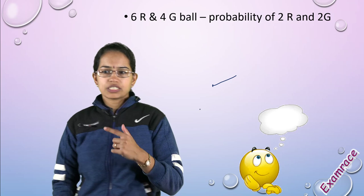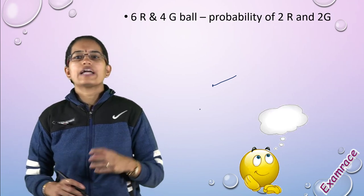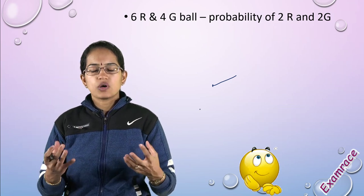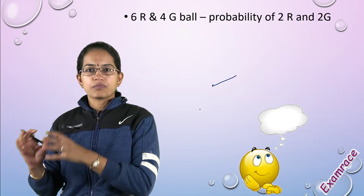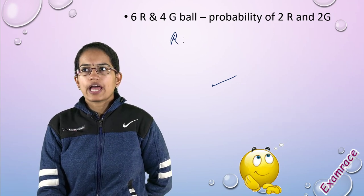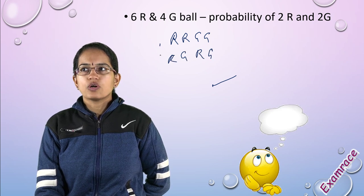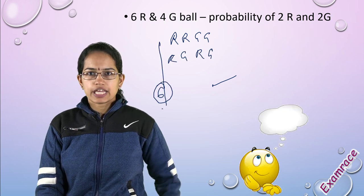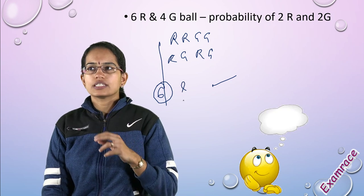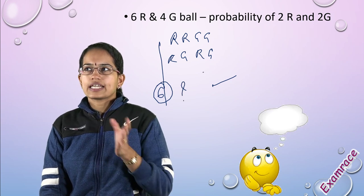There was a question on probability - conditional probability. You had 6 red balls and 4 green balls. You have to pick out 2 red balls and 2 green balls. I can pick red-red-green-green, red-green-red-green, and so on. There could be 6 ways to pick the balls.